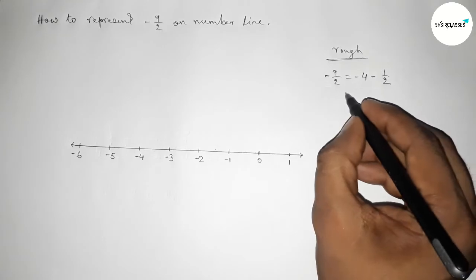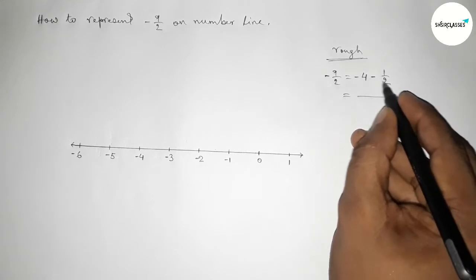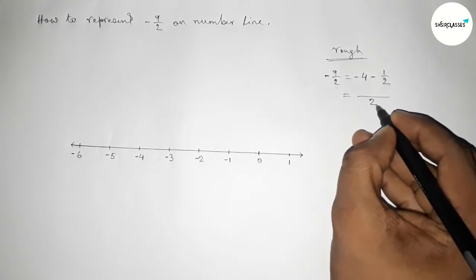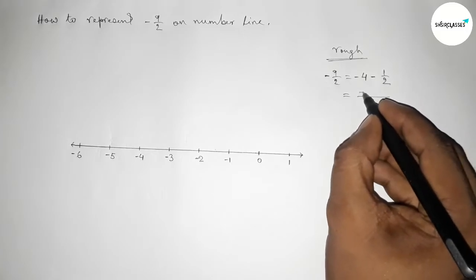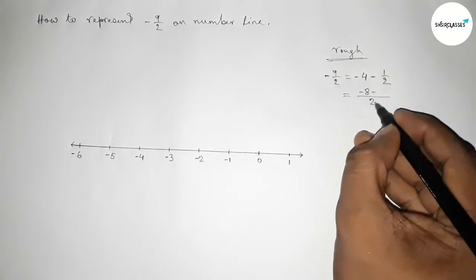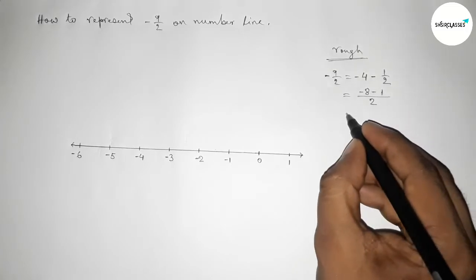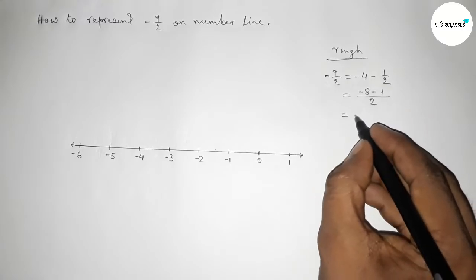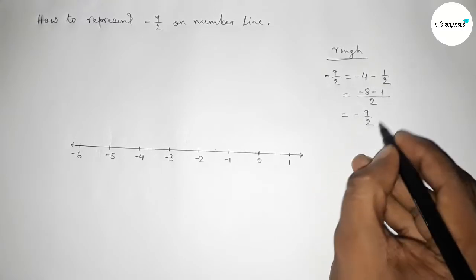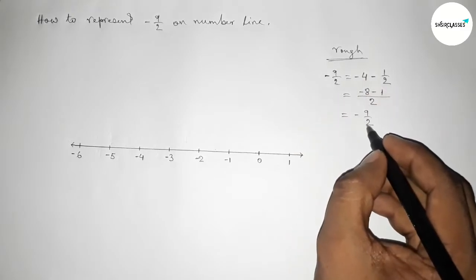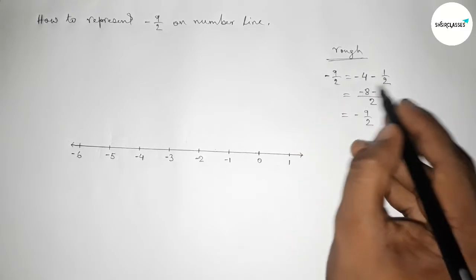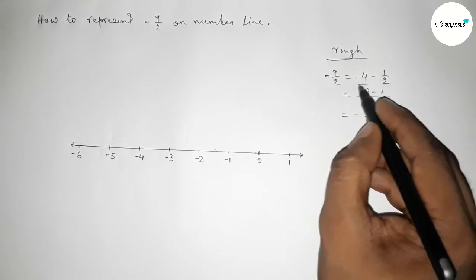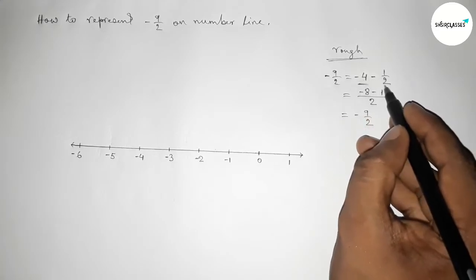Now I am going to verify this. So here the LCM will be two, and two times four is minus eight, and here this is one. So simplifying this, so this is minus nine by two. So this one and this one are same, so we can write minus nine by two equals to minus four minus one by two.